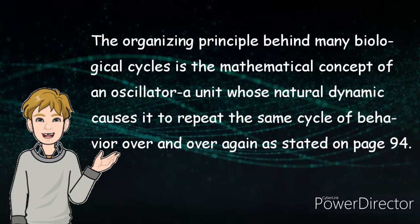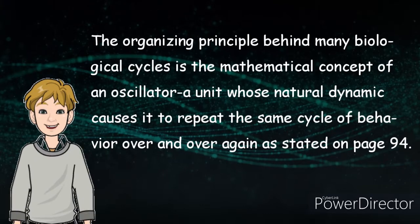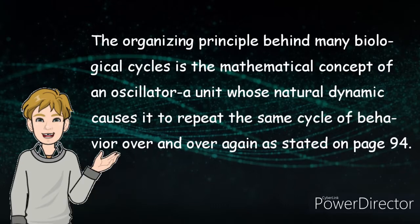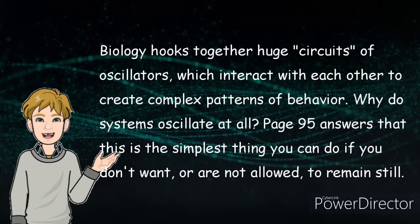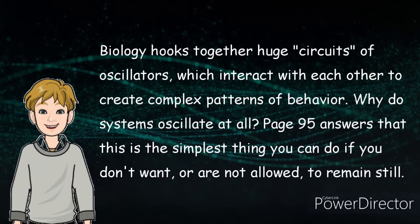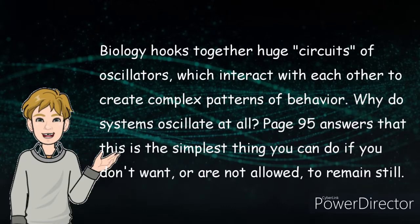The organizing principle behind many biological cycles is the mathematical concept of an oscillator — a unit whose natural dynamic causes it to repeat the same cycle of behavior over and over again. As stated on page 94, biology hooks together huge circuits of oscillators which interact with each other to create complex patterns of behavior. Why do systems oscillate at all? Page 95 answers that this is the simplest thing you can do if you don't want, or are not allowed, to remain still.